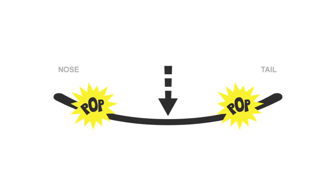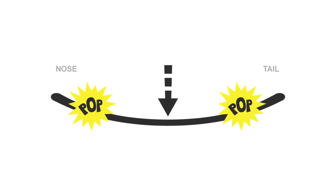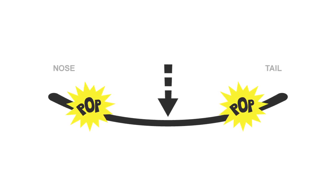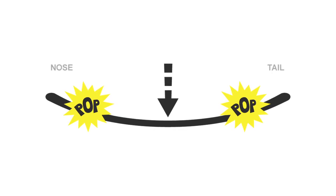With a twin, the flex is perfectly symmetrical from tip to tail for a balanced ride that's equally versatile regular or switch, frontside or backside.